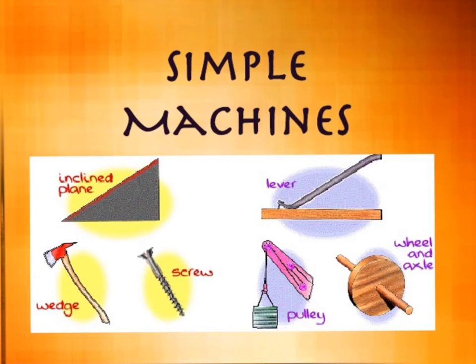In this video, we will be reviewing simple machines. A simple machine is a mechanical device that changes the direction or the magnitude of a force. In general, they can be defined as the simplest mechanism that uses mechanical advantage or leverage to multiply force.